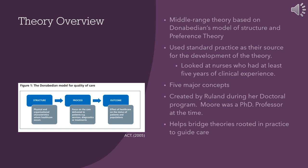The Peaceful End-of-Life Theory is a middle-range theory based on Donabedian's model of structure as well as the preference theory. The Donabedian model for quality of care has three components: structure, process, and outcome. This helped guide the standard practice for the development of the theory. Moore and Ruland looked at nurses who had at least five years of clinical experience. The theory is also based in five major concepts: pain, comfort, dignity, peace, and closeness to others.